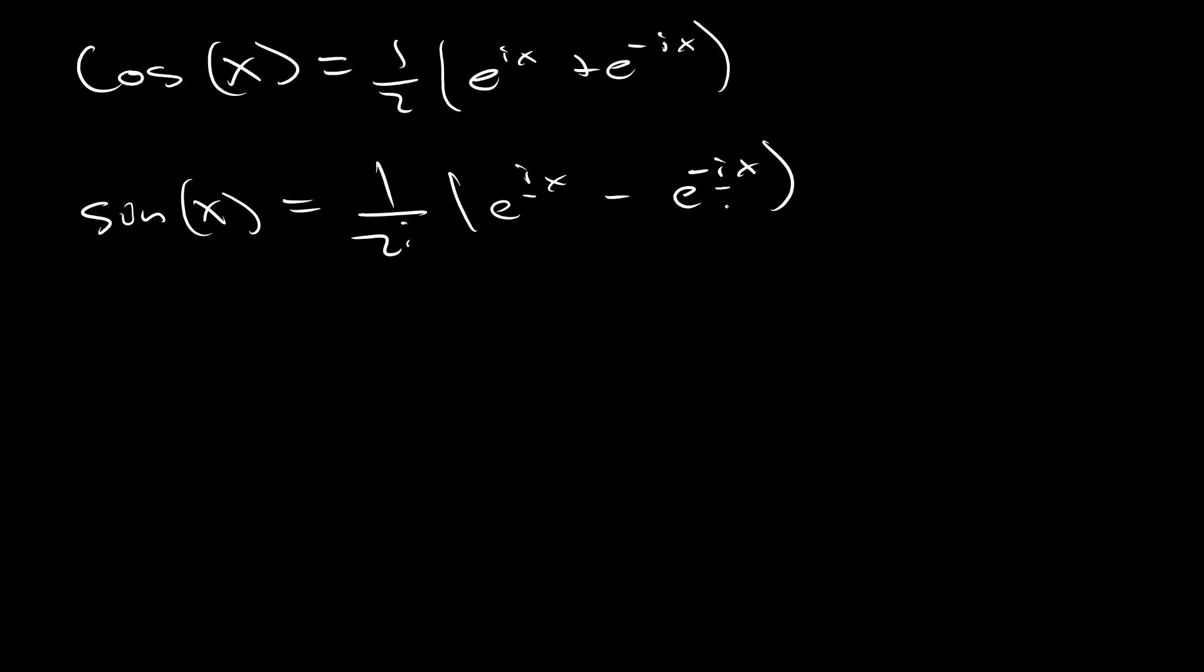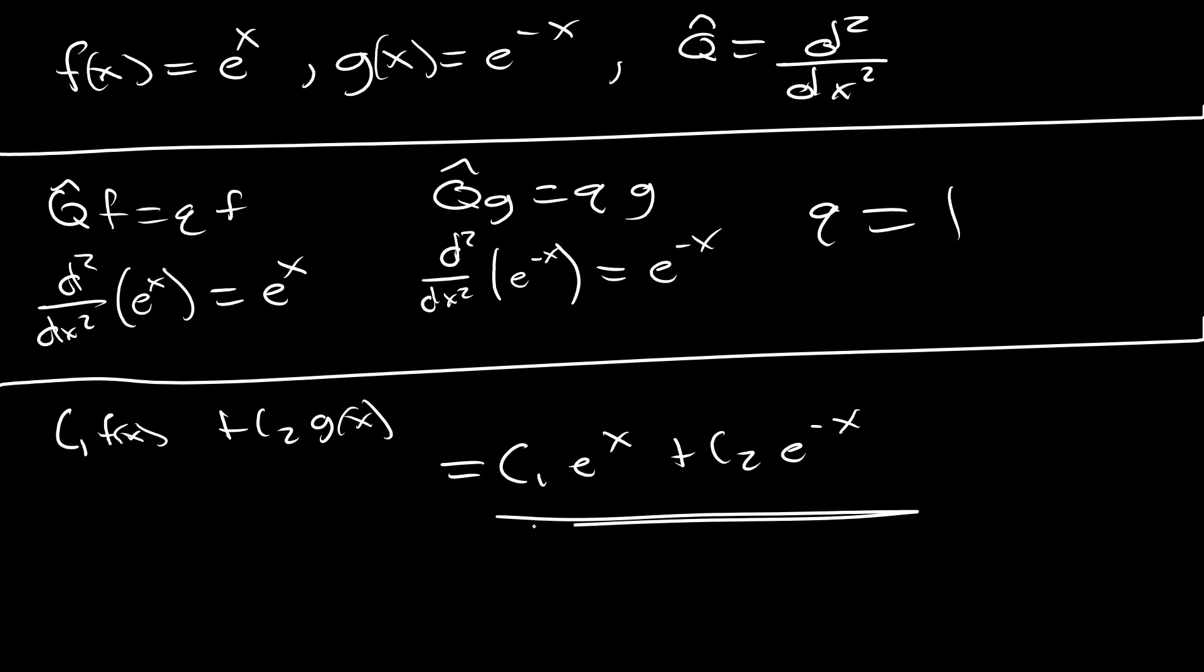Well, that's kind of a problem because we don't have any imaginary numbers here. And then similarly, sine of x is equal to one on two i e to the ix minus e to the minus ix. And again, we have these imaginary numbers in here that kind of complicate things. So we can't write things in terms of sines and cosines. But are there any other trig functions that we can write that don't have any imaginary numbers in our exponentials? And in fact, we do have that. We know that for a hyperbolic cosine or cosh of x, that is equal to one-half e to the x plus e to the minus x. Hang on a minute, if we go back, that looks pretty similar to what we have right here.